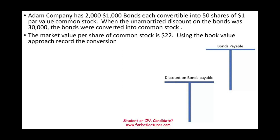Hello and welcome to this session in which we would look at a convertible bond example. Atom Company has 2,000 $1,000 bonds, each convertible into 50 shares of $1 par value common stock. So Atom Company has 2,000 bonds, each with a face value of $1,000, and each bond is converted into 50 shares — giving us 2,000 times 50, which equals 50,000 new shares if we convert.